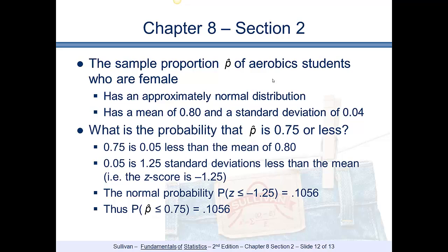We want to determine the probability that p-hat is 0.75 or less. Since 0.75 is 0.05 less than the mean of 0.80, and the standard deviation is 0.04, we calculate the z-score: (0.75 minus 0.80) divided by 0.04 equals negative 1.25. Looking at our z-table, the probability that z is less than negative 1.25 is 0.1056. Therefore, the probability that p-hat is less than or equal to 0.75 is 0.1056.